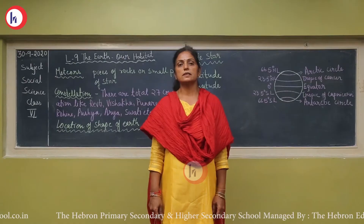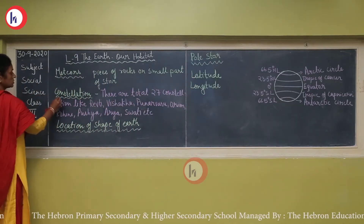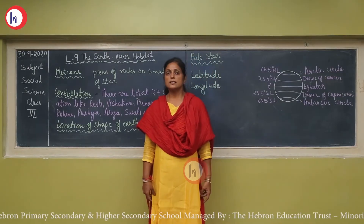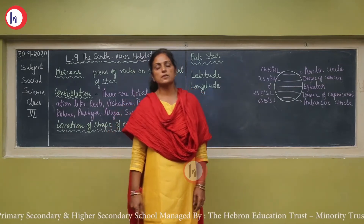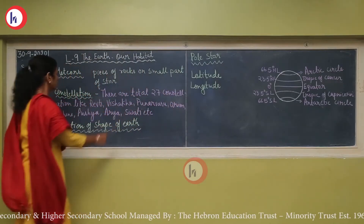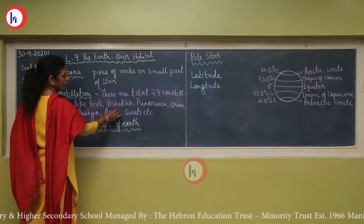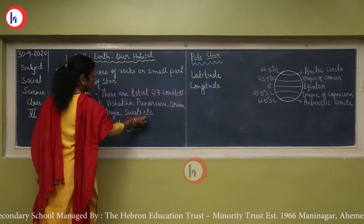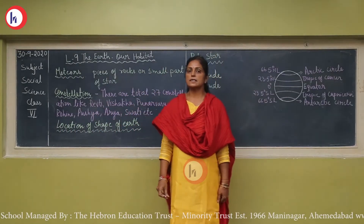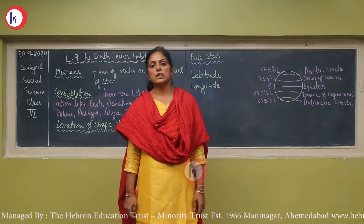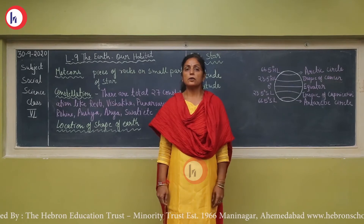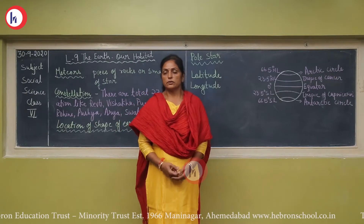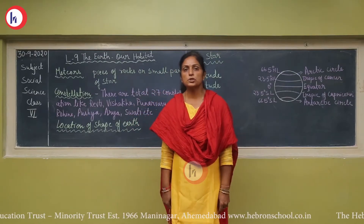These depressions are filled with water and lakes are formed. Lake Lonar in Maharashtra is believed to have formed in such a way. The next topic is constellations. A group of stars, or even a single star, is known as a constellation. Sometimes these constellations have a specific shape. There are 27 constellations, including Rohini, Vishakha, Punarvasu, Orion, Pushya, Swati, and others, all of different sizes and shapes.